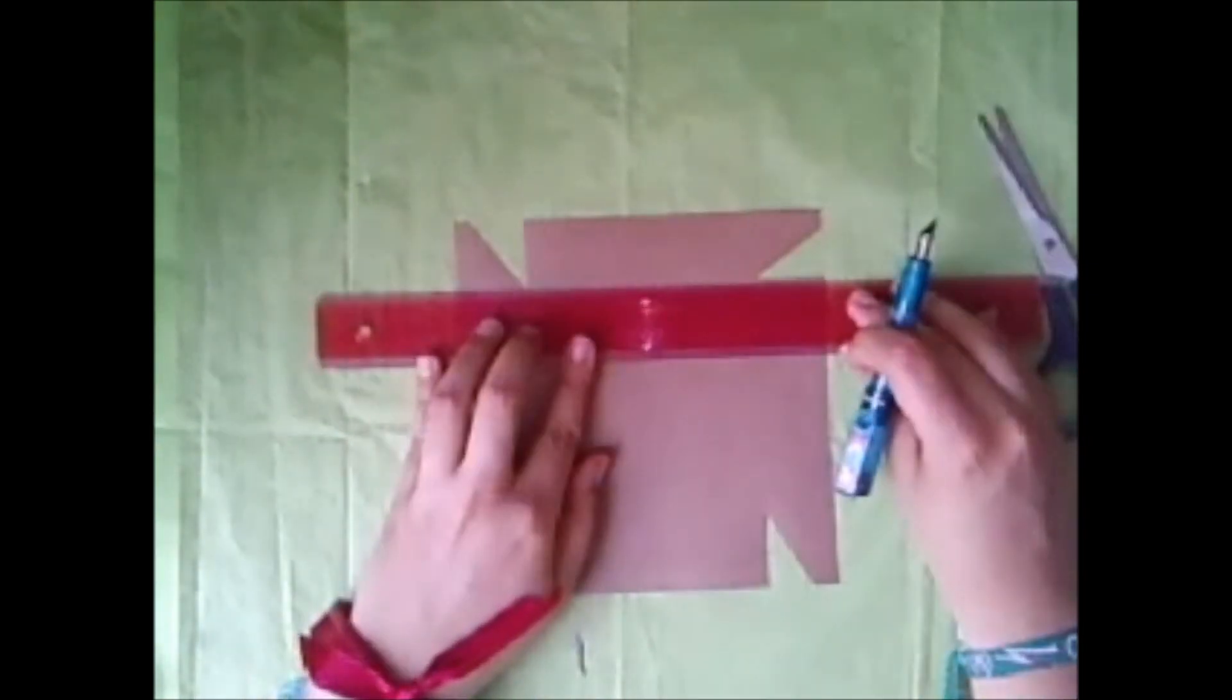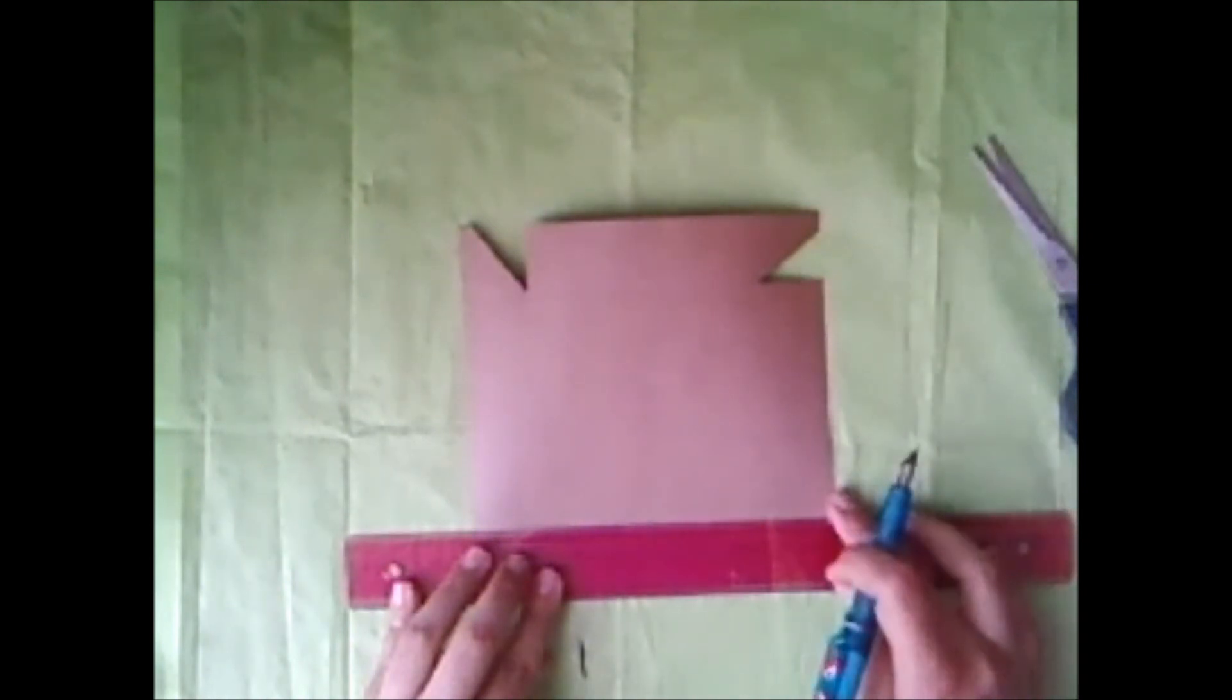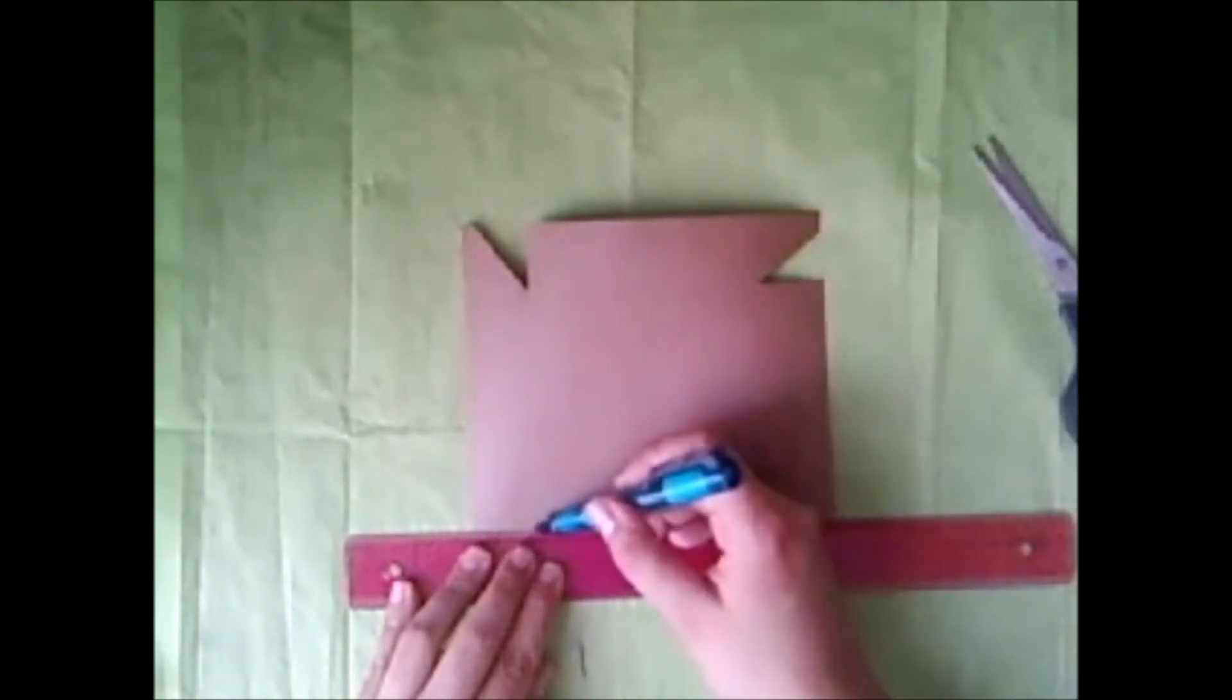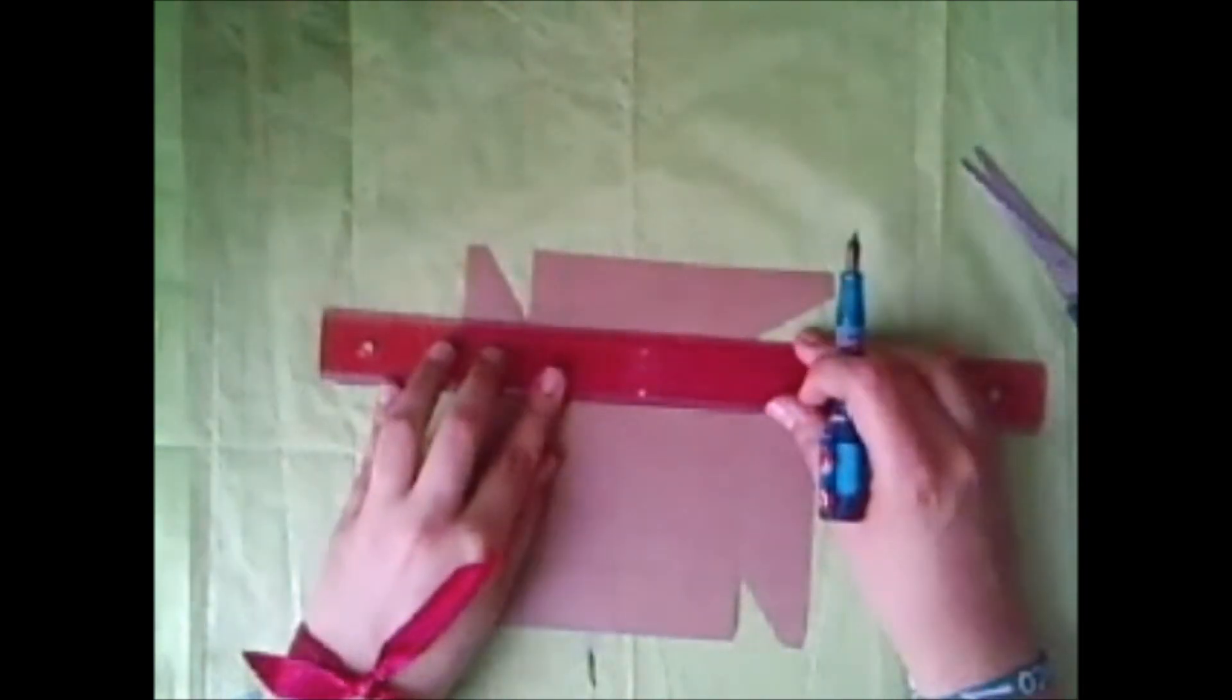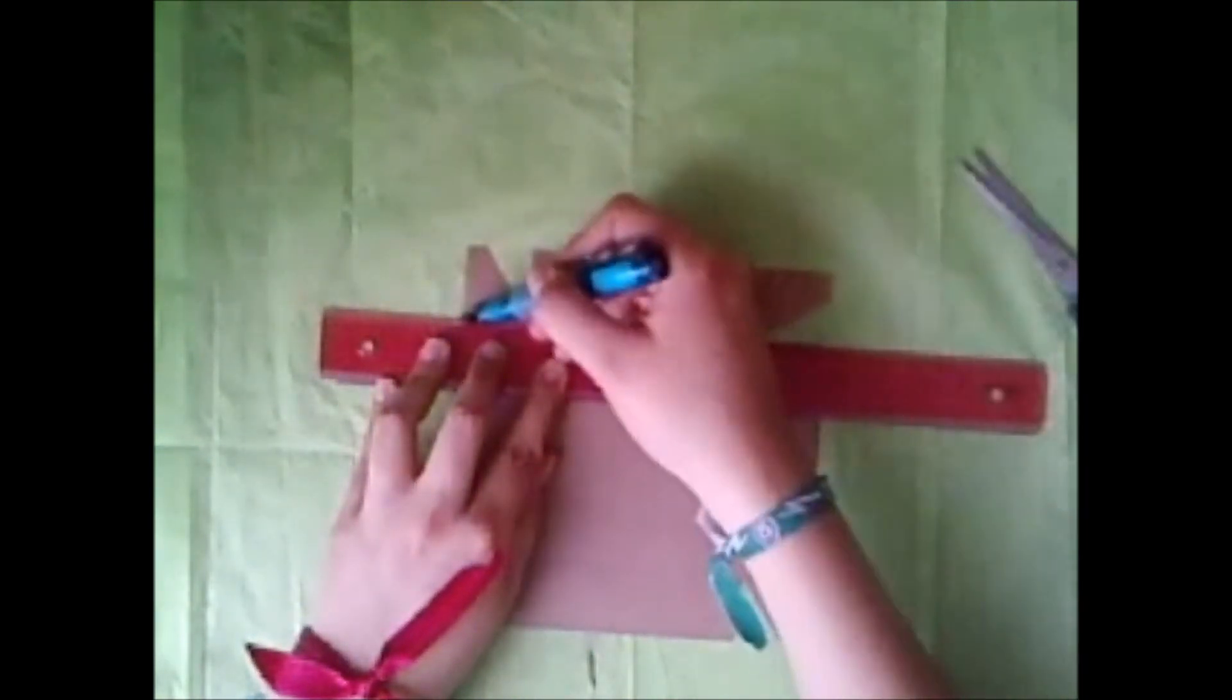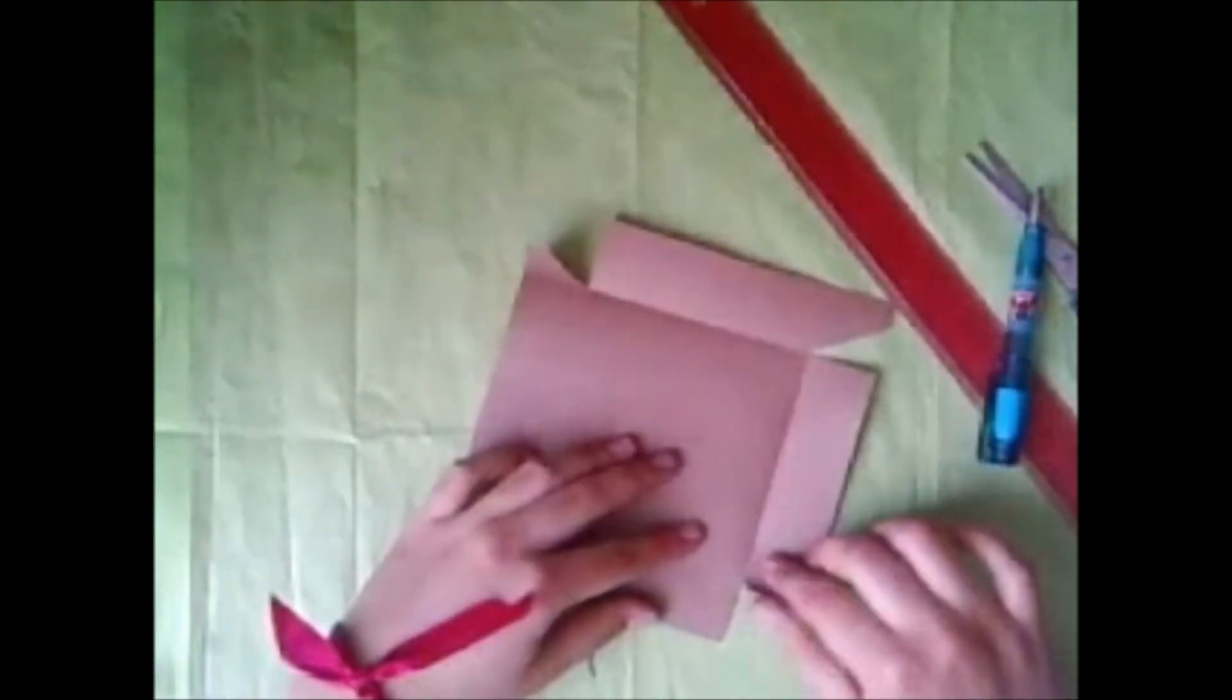Y ahora vamos a marcar los pliegues para poder doblar más fácilmente. Y ya tendremos nuestra segunda figura. La dejamos de lado.